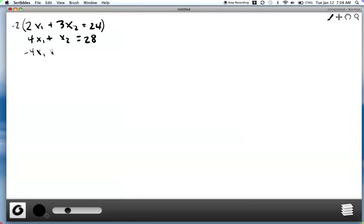So we end up with negative 4x1 minus 6x2 equals negative 48, right? And then we added that. So the x1's canceled out. Then we ended up with negative 5x2 here equals negative 20. So x2 is equal to 4.